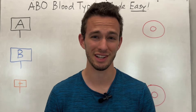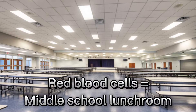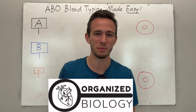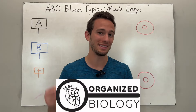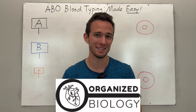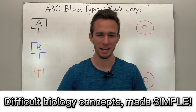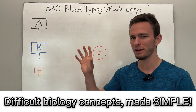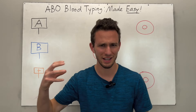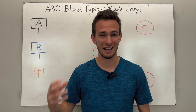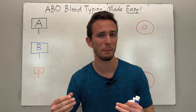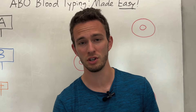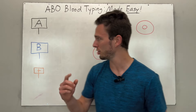Your red blood cells are just like a middle school lunchroom. Let me explain. Hey everybody, Organize Biology here where we make difficult biology concepts simple. Today we're discussing ABO blood typing, one of the most frustrating concepts to understand if not taught properly. Make sure you watch all the way through this video to fully understand how it works.